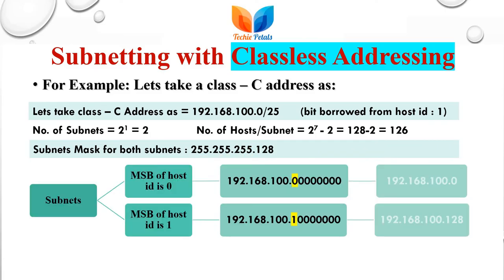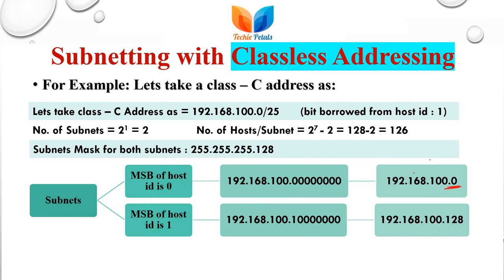If we use one bit from the host ID, there are two possibilities: the MSB of the host ID can be 0 or 1. This gives us two subnets. For the first case, the subnet ID ends in 0 — that is the ID of the first subnet. For the second case, that bit is 1 — that is the ID of the second subnet. So under one network address, we create two subnets by borrowing one bit from the host ID.